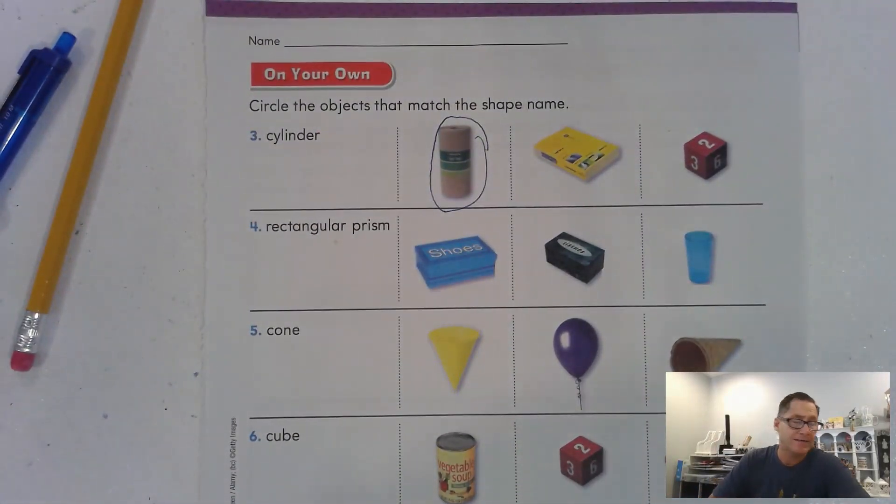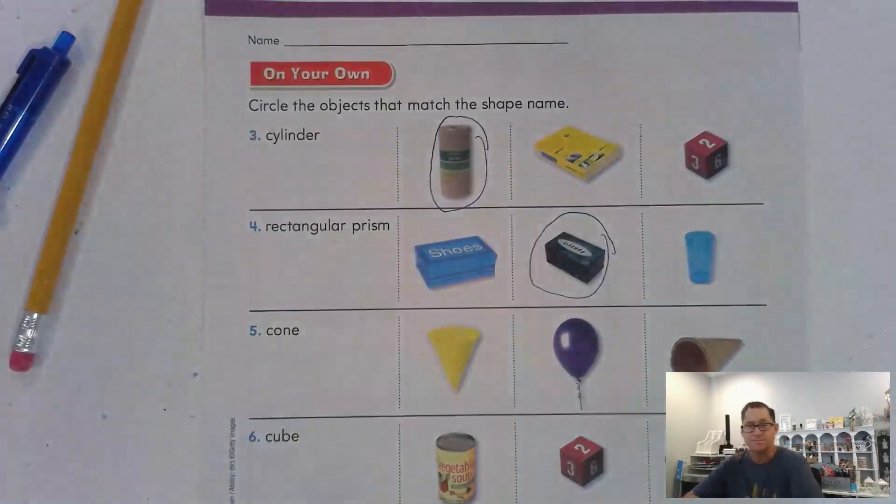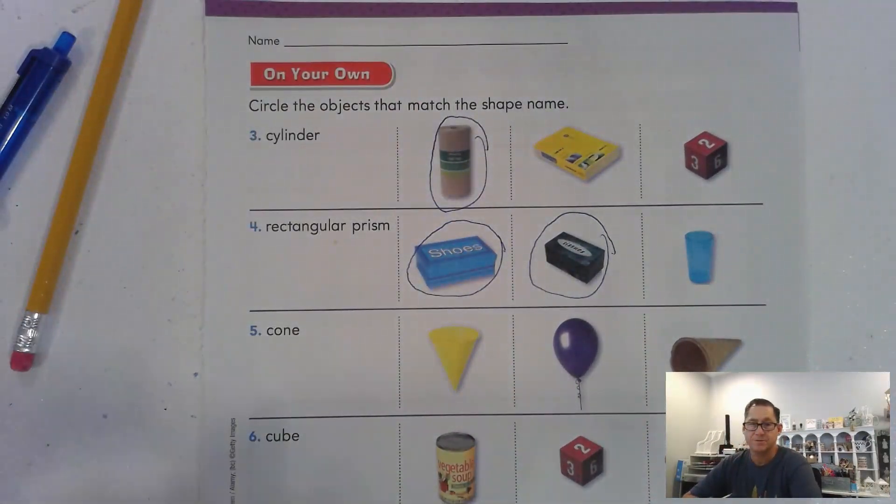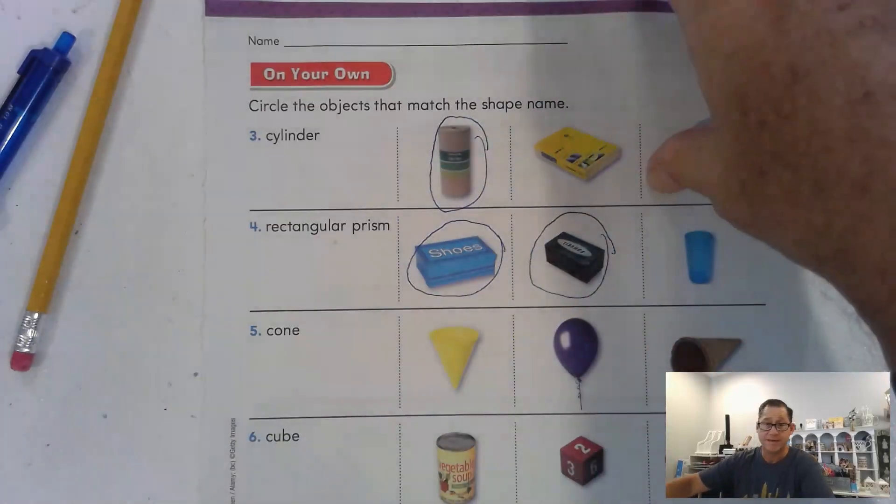Which one is a rectangular prism? Well, now be careful on this one, because we've only been circling one, right? But that's a rectangular prism. And so is this. So this one, there were two rectangular prisms.